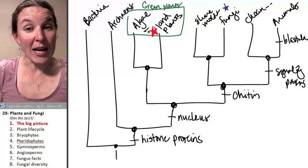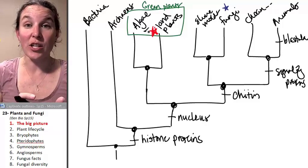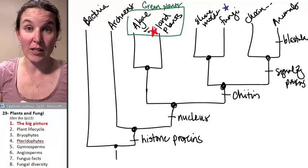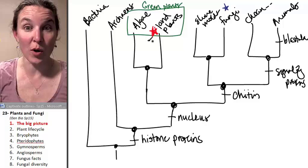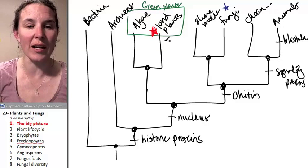Then we're going to break down different kinds of land plants. We're actually going to look at four different flavors of land plants, and we're going to look at how they're related to each other, and we're going to flesh out this part of the cladogram.